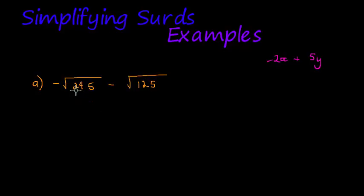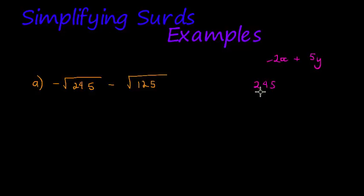What I'd like to do is simplify these surds so that I have roots that are the same. I'm going to prime factorize 245 and 125. For 245: can 2 go in? No. Can 3 go in? I add the digits: 2 plus 4 plus 5 is 11, not divisible by 3. The next prime is 5, and 5 goes into 245 — 5 goes into 24 four times and into 45 nine times, giving 49, which is 7 squared.